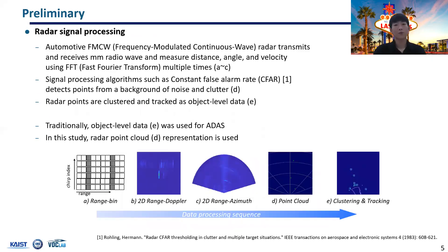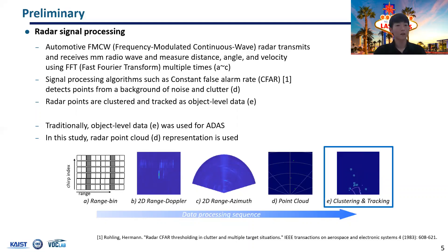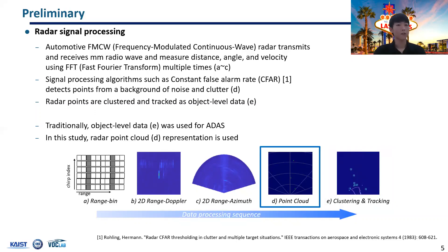I will briefly introduce the radar signal processing process and its representation. FMCW radar is generally used in automotive applications; it transmits and receives radio waves to measure distance, angle, and velocity using FFT. After that, conventional signal processing algorithms such as CFAR detect points from background noise and clutter. Finally, the points are clustered and tracked into object-level data. This object-level data has traditionally been used for ADAS, but its performance is limited to less complicated environments such as highways. So in this study, we exploit the radar in point cloud representation to achieve LiDAR-level performance.